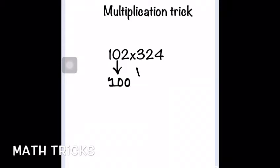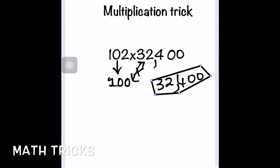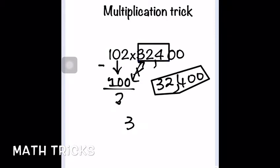The same process applies: round 102 to the nearest hundred, which is 100, and multiply by 324 to get 32,400. Keep that number aside and come back to 102. Now subtract 100 from 102, which gives you 2.